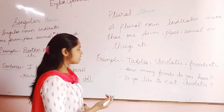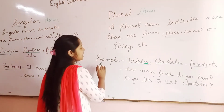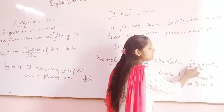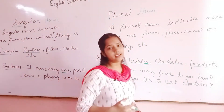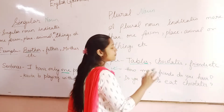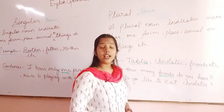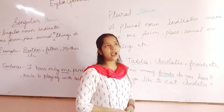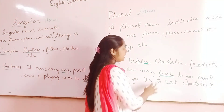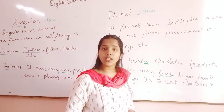Now we will discuss with examples and sentences. Tables — lots of tables — plural noun. Lots of chocolates — plural noun. Lots of friends — plural noun. For the sentence: 'How many friends do you have?' You might answer: 'I have four friends' or 'I have five friends.' If you are having more than one friend, it will come under plural noun.